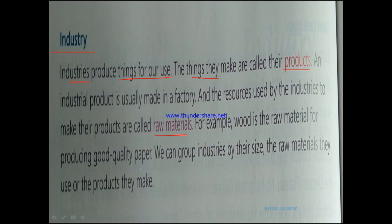For example, wood is the raw material for producing good quality paper. The books and copies you use are made of paper, and paper is made from wood. So wood is the raw material, the product is the paper, and the factory where paper is made is known as the paper producing factory. We can group industries based on their size, the raw materials they use, and the products they make — these are the three categories through which we can divide the different types of industries.